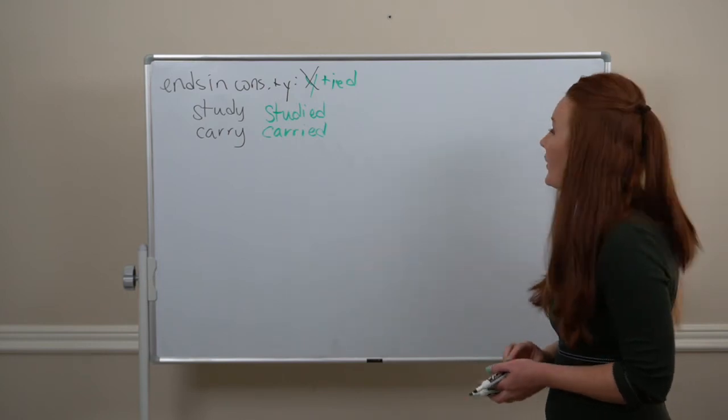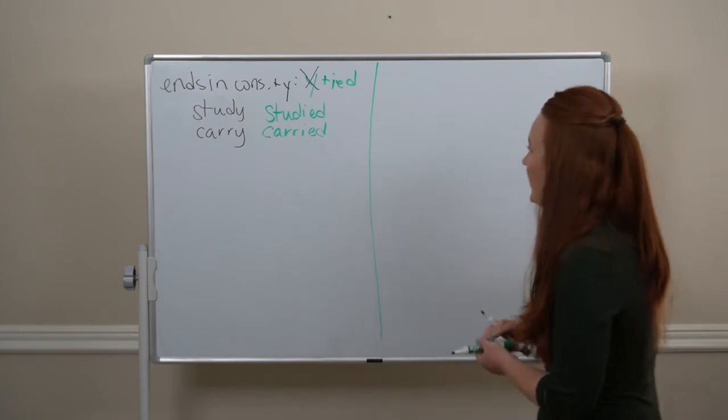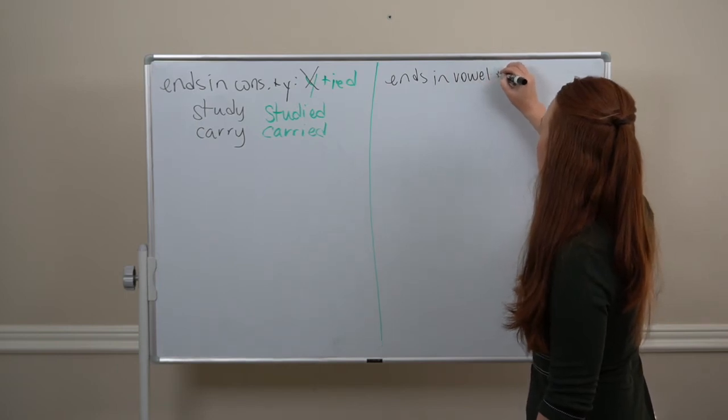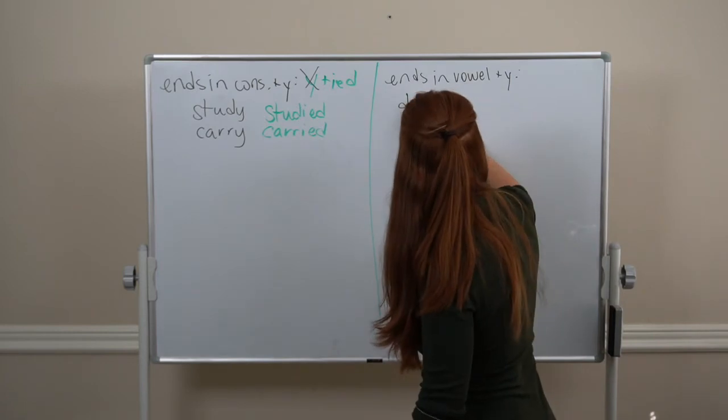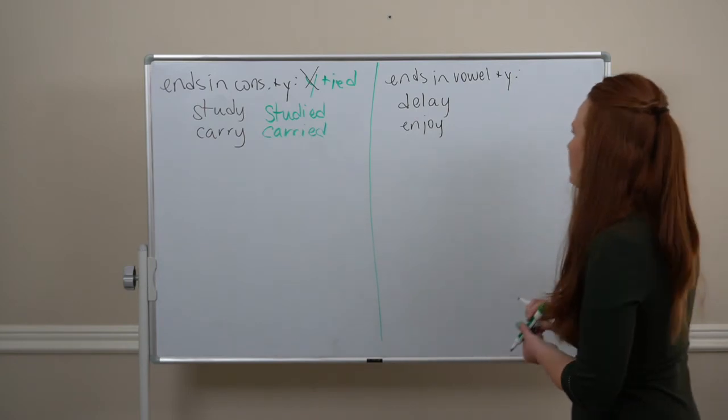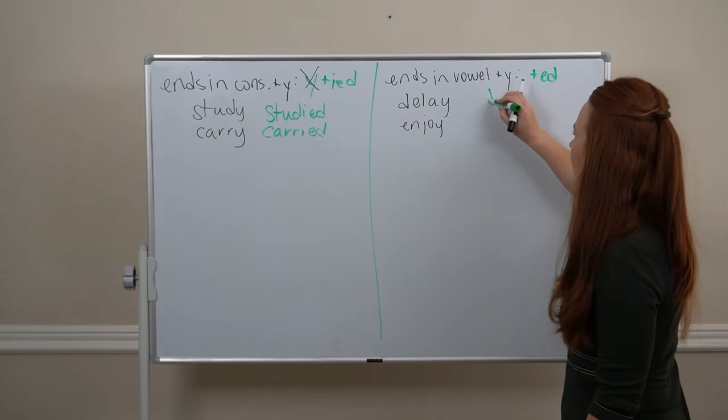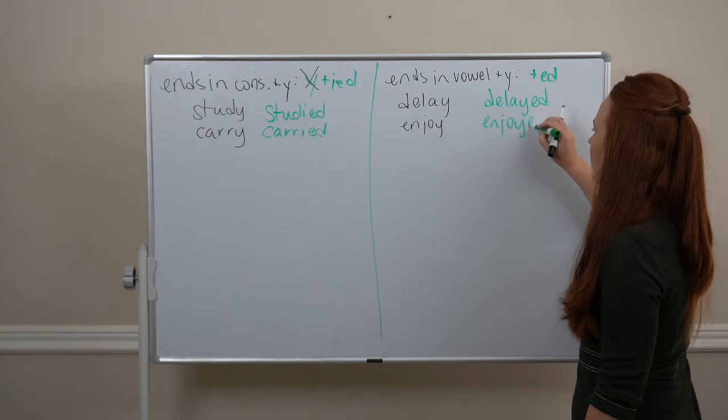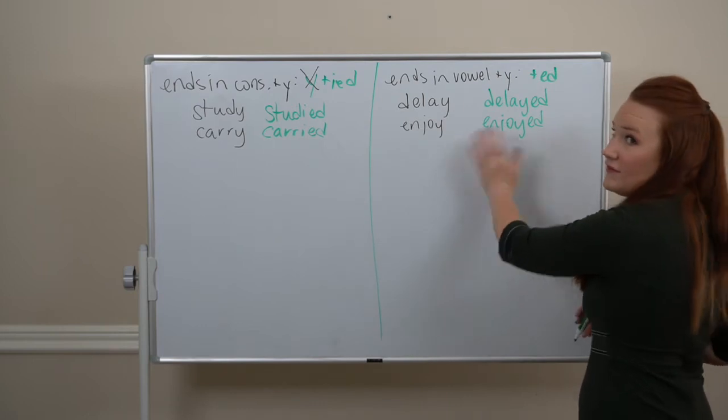But, if a verb ends in a vowel and a Y, like delay or enjoy, we'll just do the regular ED ending. Delay becomes delayed, enjoy, enjoyed. So, consonant plus Y, vowel plus Y.